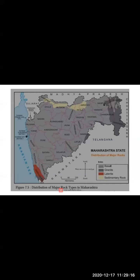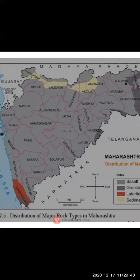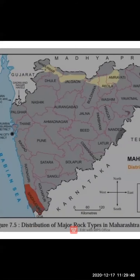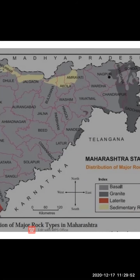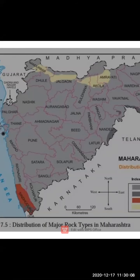Here is a map of Maharashtra showing different types of rocks found in different places. Basalt rock is found in various parts of Maharashtra, granite is found in Gadchiroli, Gondia, Bhandara, parts of Nagpur, and Nanded. Sedimentary rocks are seen in Amravati, Akola, and Nandurbar. Laterite is found in Sindhudurg.